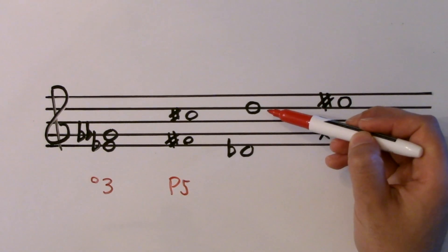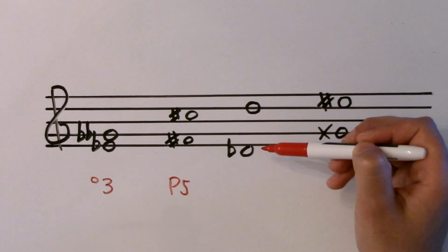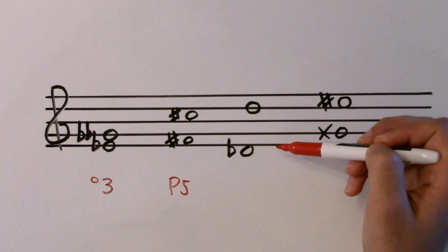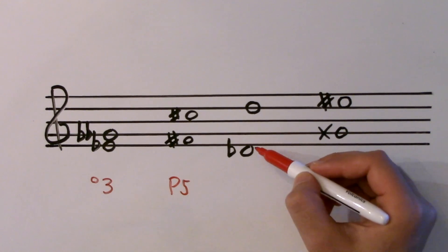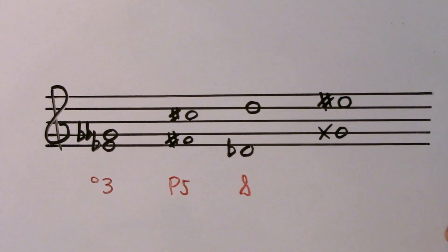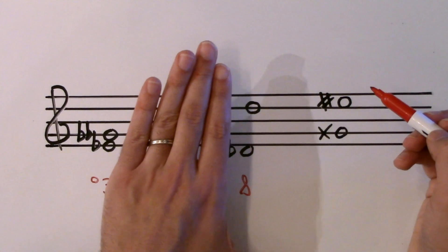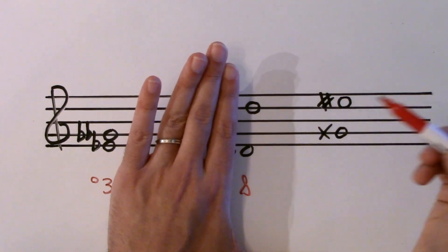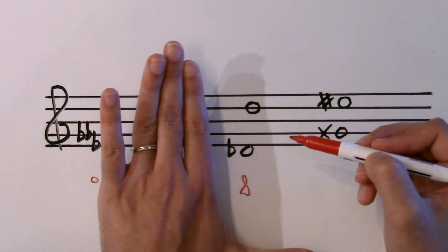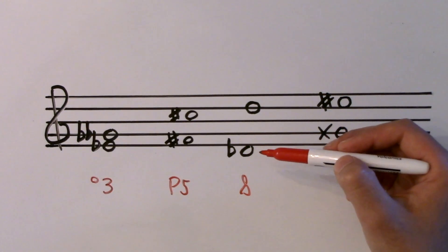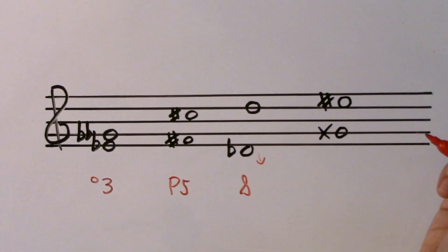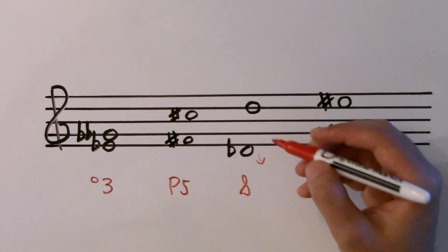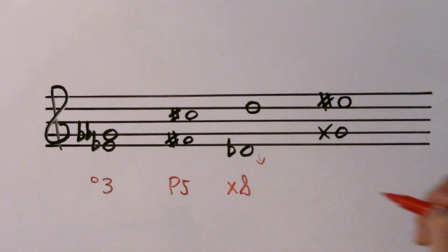Over here we've got D natural and D flat. In a D flat major scale we do not have D naturals, so something's off. The distance is an eighth. Covering the flat — D to D is a perfect eighth. When I take my hand away and the flat comes back in, the flat pulled that D down, so the space increased. What's bigger than a perfect? Augmented. This is an augmented eighth.